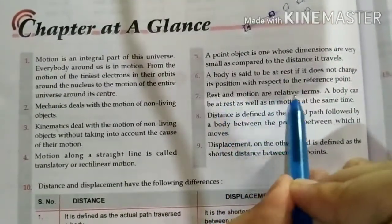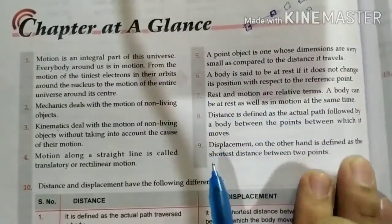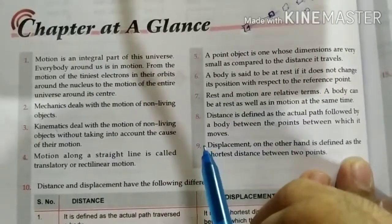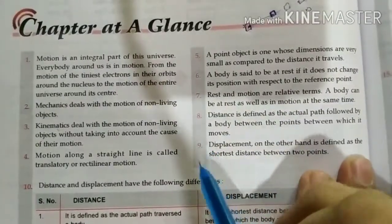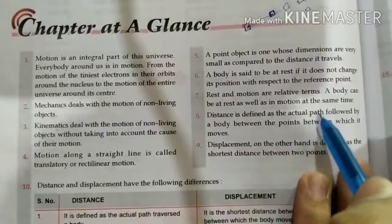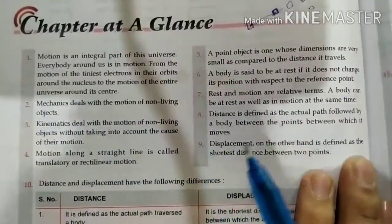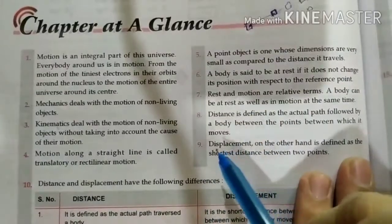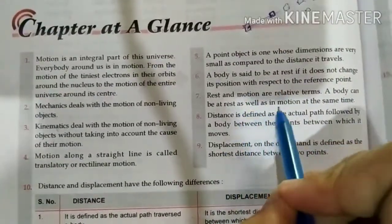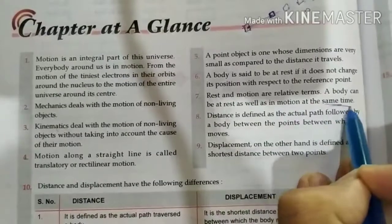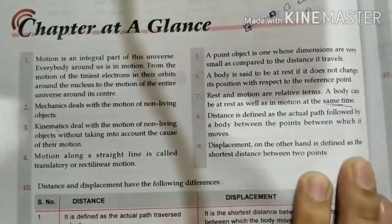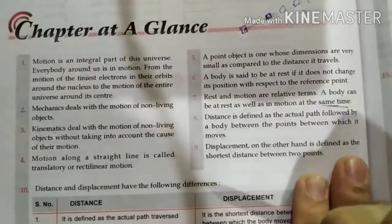It is not necessary that if something is rest then it will always be rest, but not in motion. Sometimes one body has two reference points in different positions. Any body can be rest as well as motion at the same time. At the same time any body can rest and motion. Let's give an example.